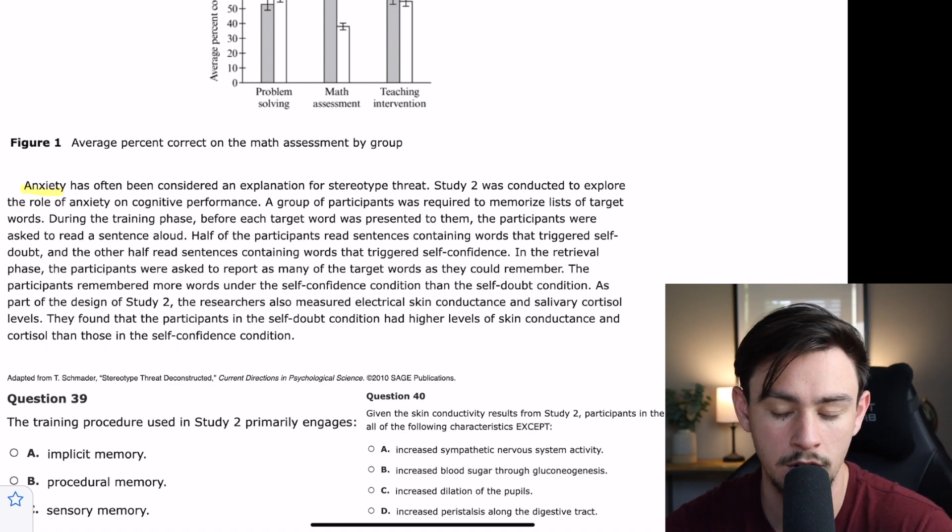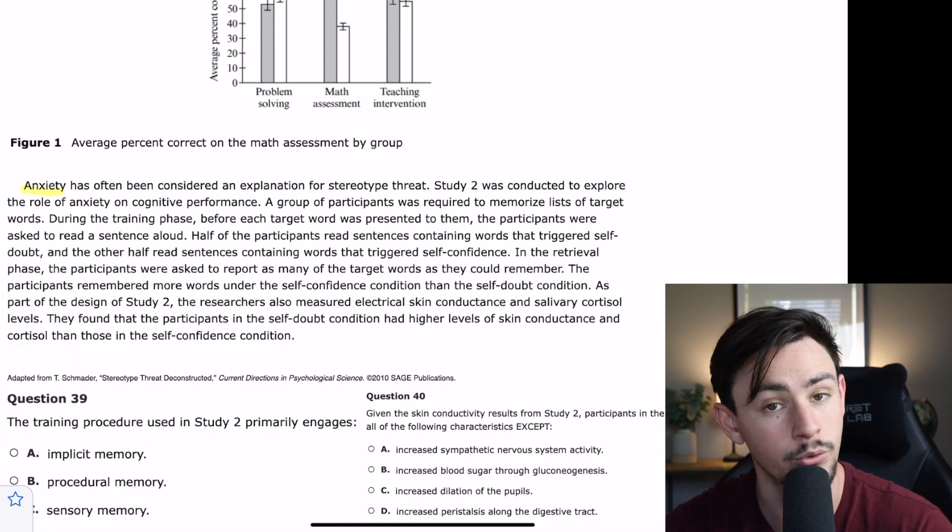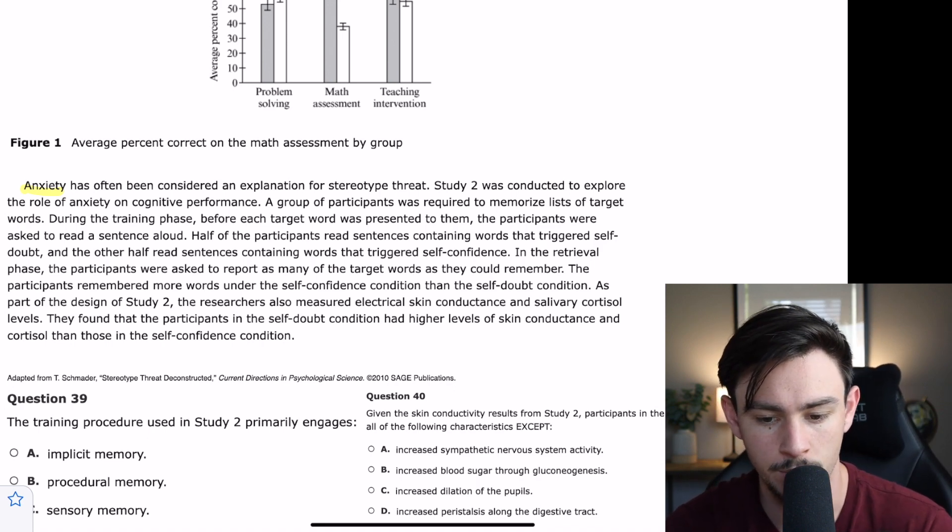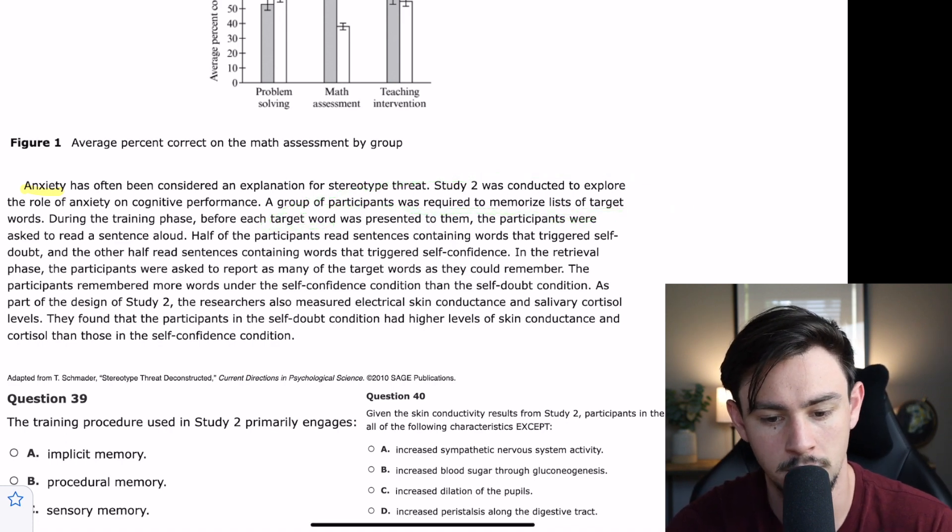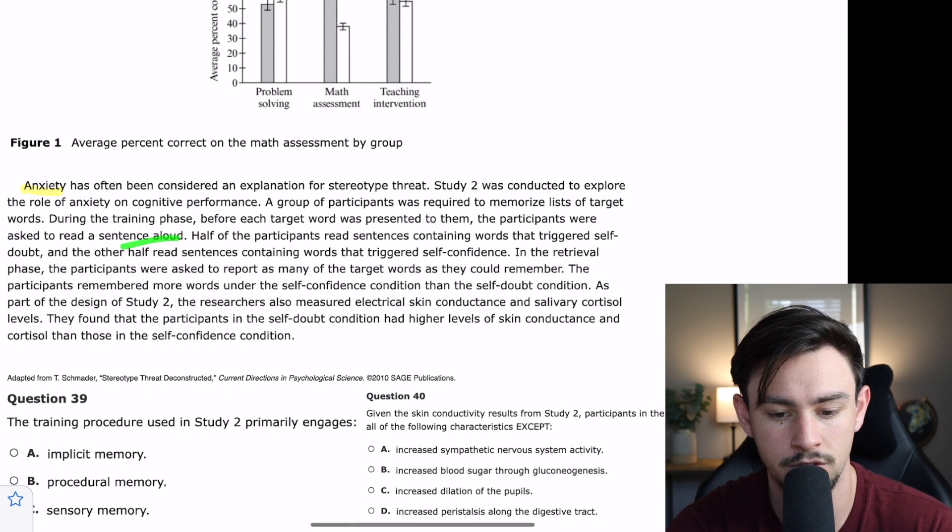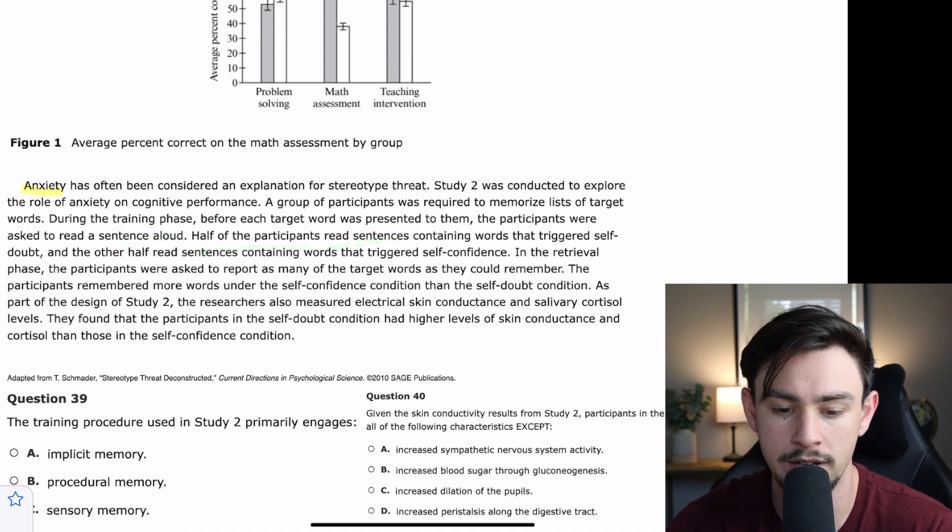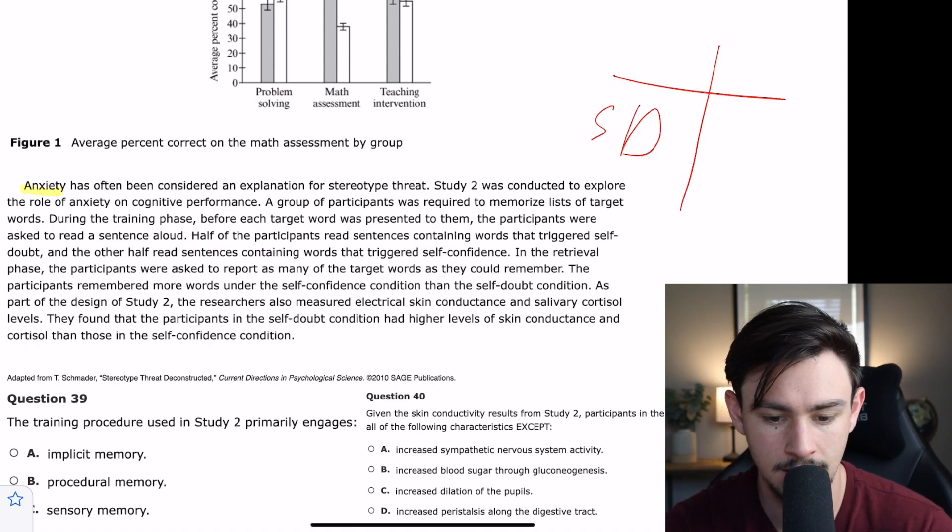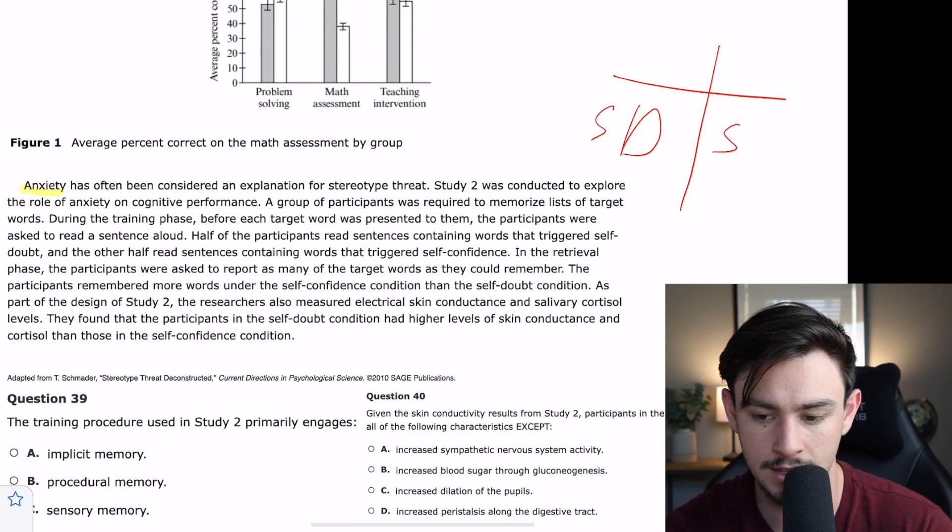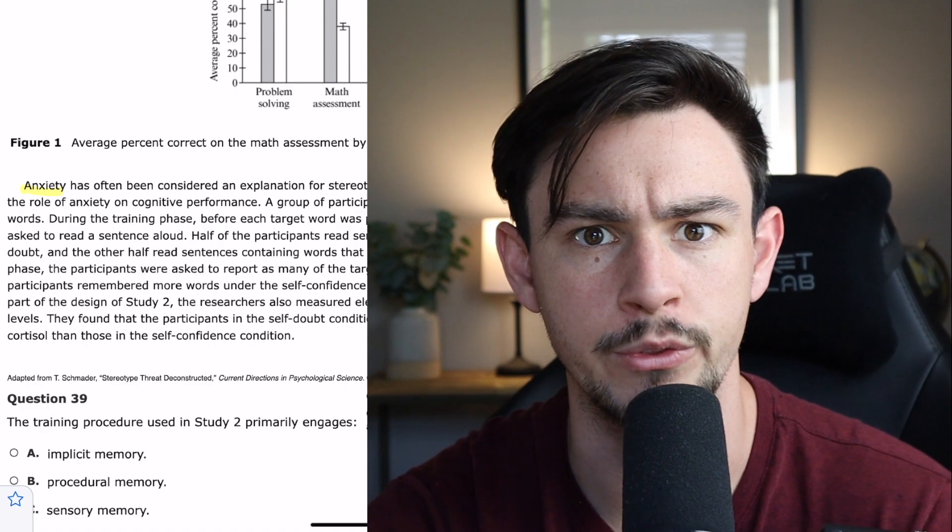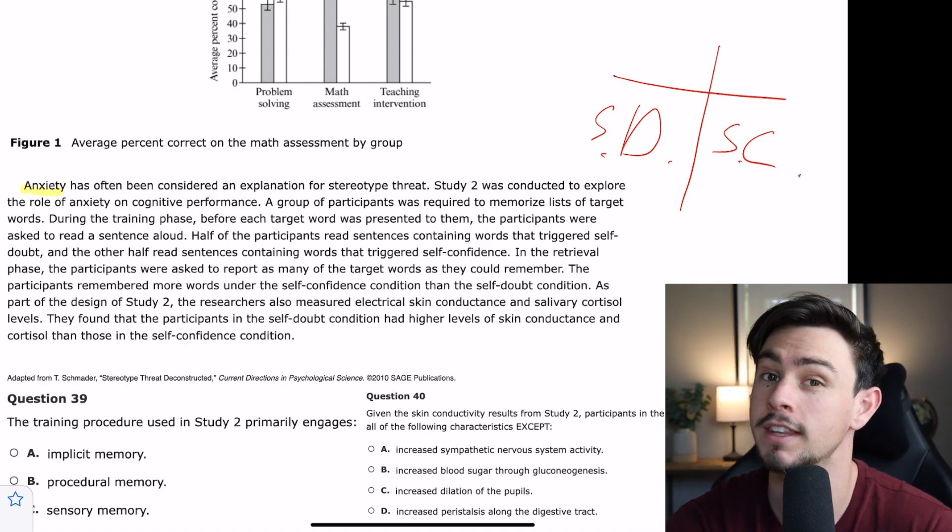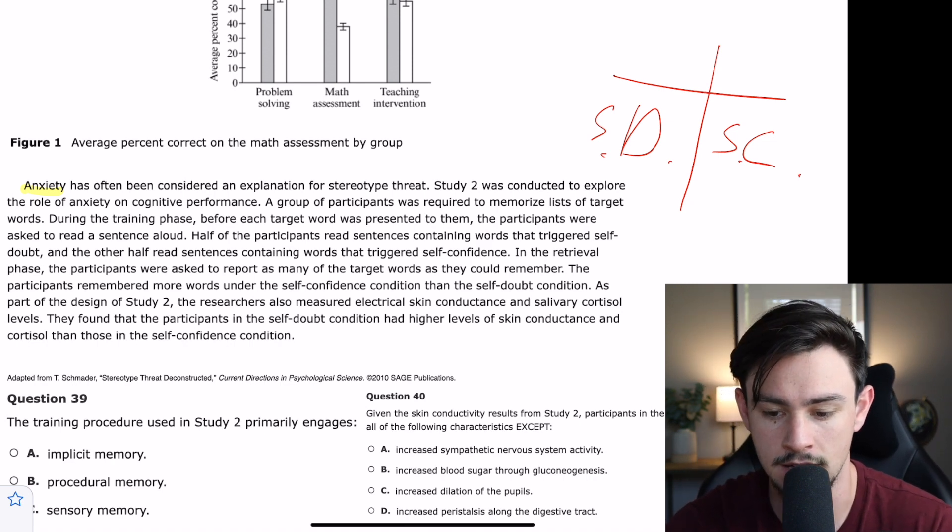A group of participants was required to memorize lists of target words. During the training phase, before each target word was presented to them, the participants were asked to read a sentence out loud. Okay. So, now they're just kind of explaining to us what study 2 is. So, we've got this group of people. They're asked to memorize words. But before they're asked to memorize these words, they're asked to read a sentence out loud. Half of the people read something that is self-doubt. And I'm just going to do this. So, half the people read something that's self-doubt. And then it says, half the people read something that is self-confident. So, like, you can do this. You can make a good score in your MCAT. You can do it. Like that. That's self-confidence. So, they're going to read that stuff. And then they're going to try to memorize words.